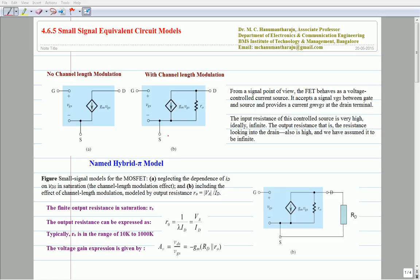The accuracy of the model has been increased by inclusion of resistance R-naught between the drain and source. The R-naught is referred as finite output resistance in the saturation region.